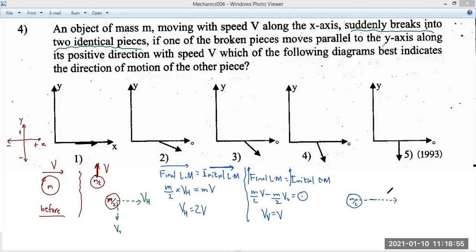Therefore, it should be, if I draw it properly according to the scale, 2v should be longer, V should be shorter. V should be shorter, right?